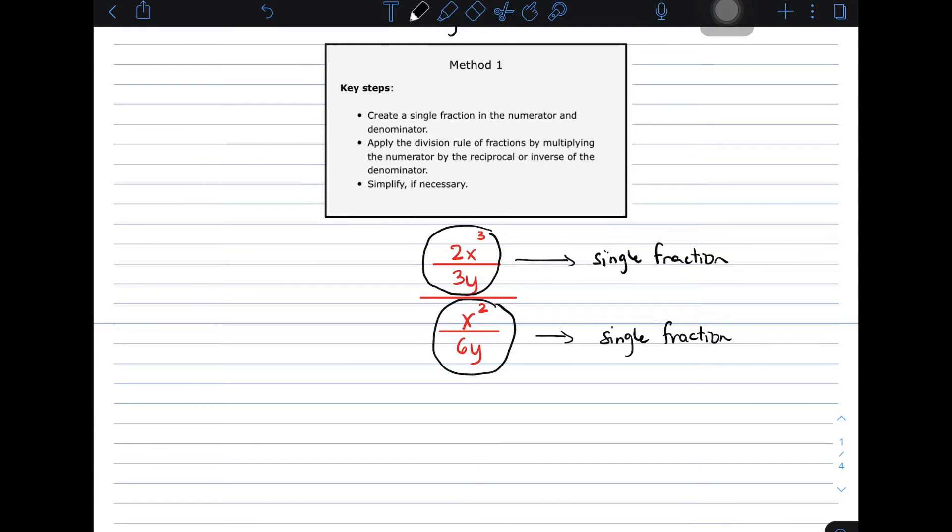And then, since they are single fractions, we will proceed to the division rule. Our division rule is we will multiply the numerator by the reciprocal of your denominator. So let's copy the numerator which is 2x cubed over 3y. Are you following? And then multiply it by the reciprocal of x squared over 6y which is 6y over x squared.